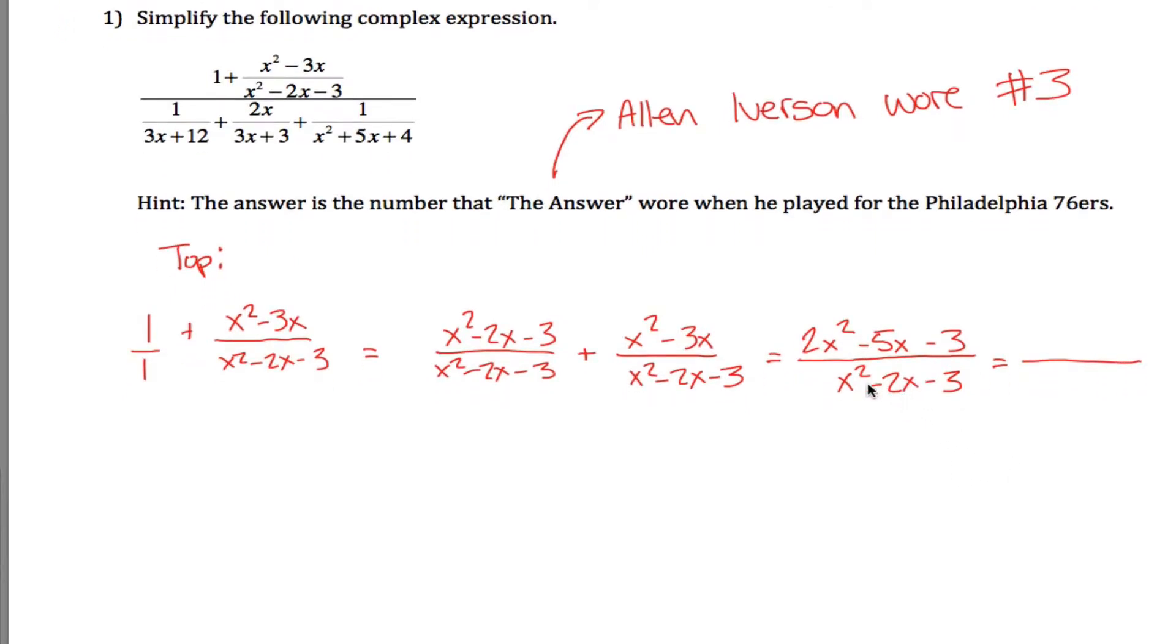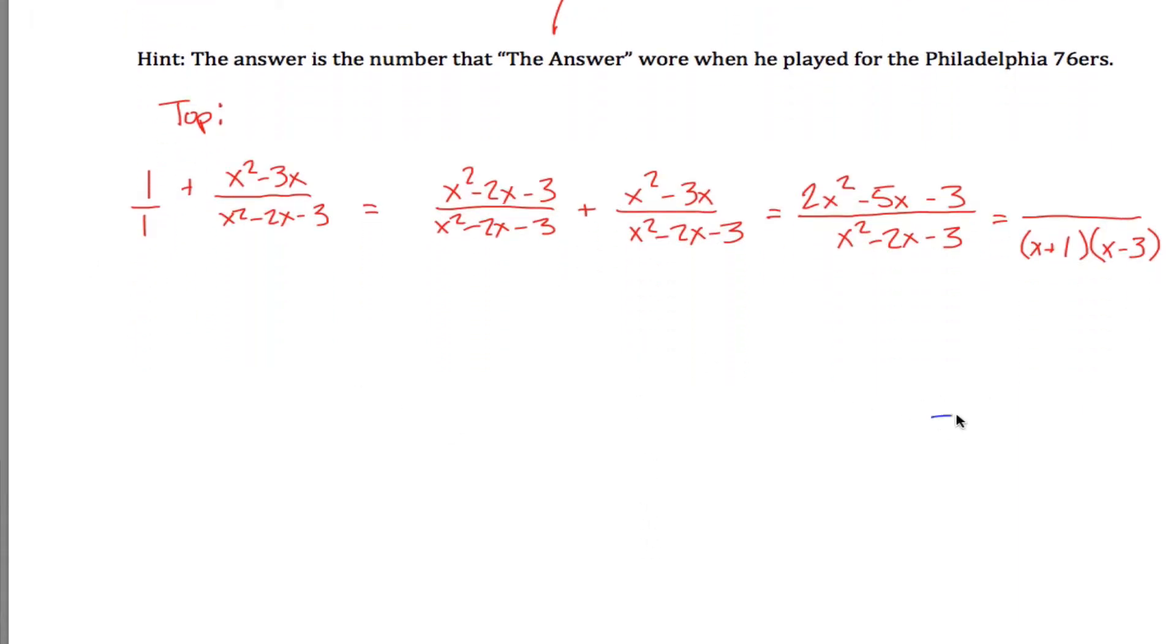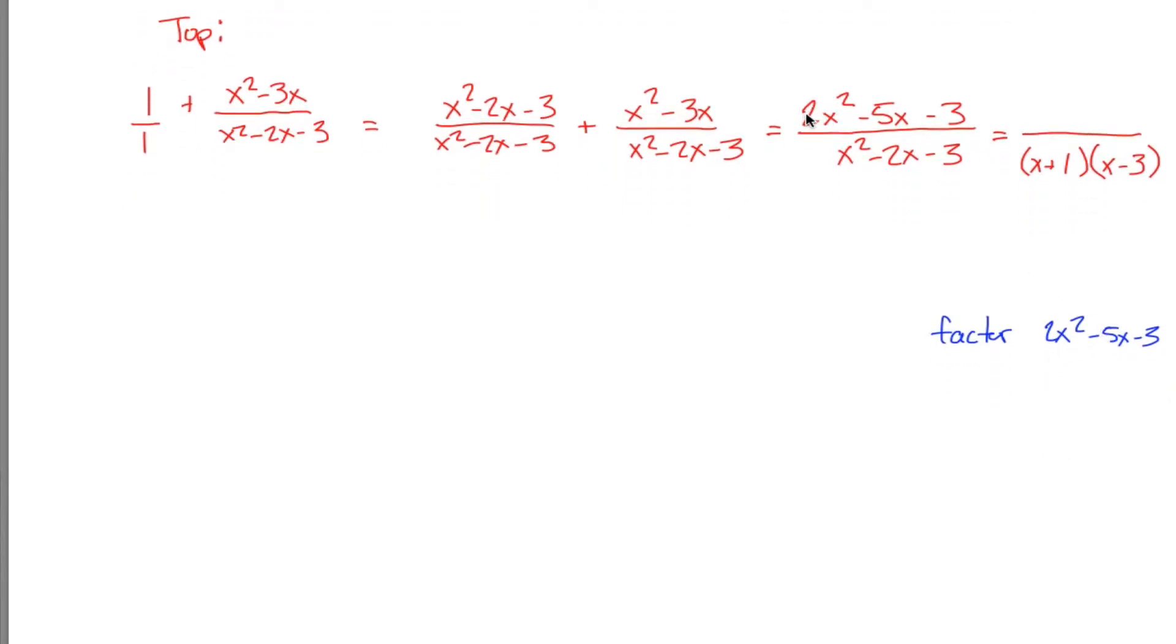Hopefully this will factor. Let's see, I need two numbers that multiply to negative 3 and add to negative 2. If I'm going to multiply to negative 3, I either have 1 and negative 3 or negative 1 and positive 3. But only 1 and negative 3 will also add up to negative 2. What I'm saying is this factors into x plus 1 and x minus 3. What about this guy? I better do that off to the side. Let's try to factor 2x squared minus 5x minus 3.